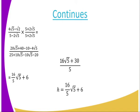After doing that, we expand the brackets normally. We get twenty root five plus forty minus ten minus four root five. Then twenty-five plus ten root five minus ten root five minus twenty. So what we get is sixteen root five plus thirty, divided by five. When we divide, you are going to get h equals sixteen over five root five plus six. So A is sixteen divided by five, and B is six. That is how we use rationalizing the denominator to get our answer.